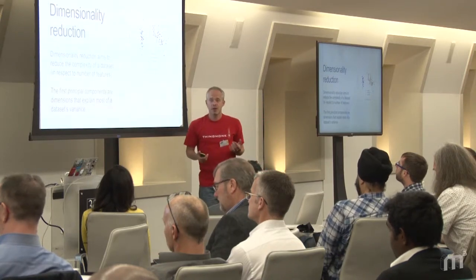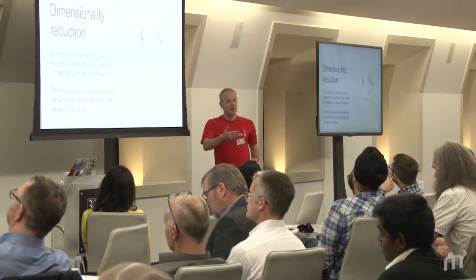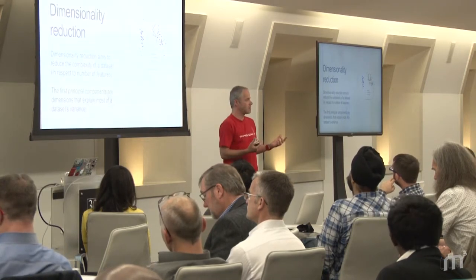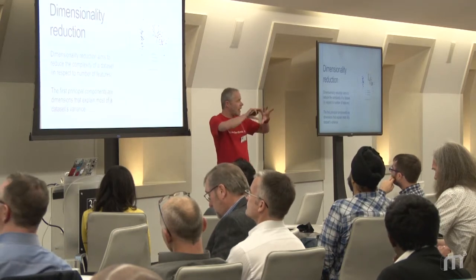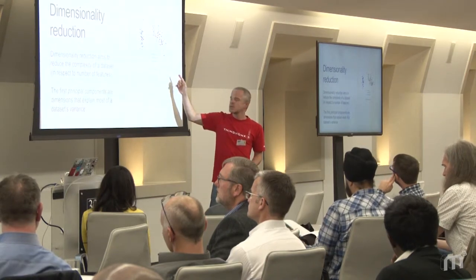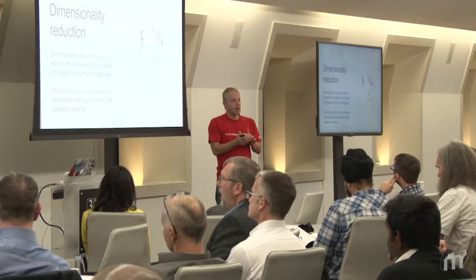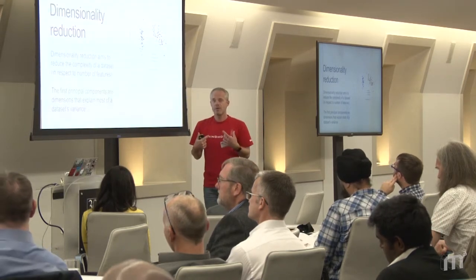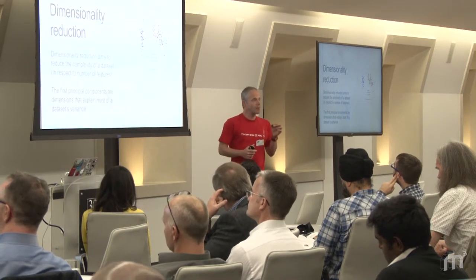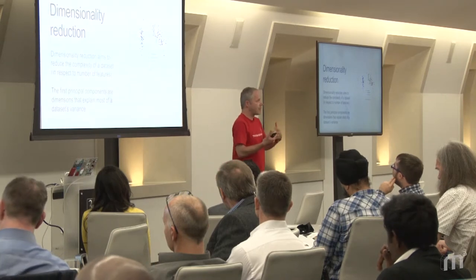A commonly used method is dimensionality reduction. Previously I showed separation based only on sepal width and length, totally forgetting about the petals. We can take this higher-dimensional feature space and condense the information into a two-dimensional plot. This method is called principal component analysis. The principal components describe which variables in your dataset contain the most information to separate your classes.